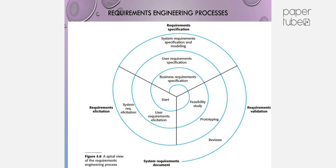What is the Requirements Engineering Process? The processes used for Requirements Engineering vary widely depending on the application domain, the people involved, and the organization developing the requirements. Requirements Engineering is an iterative activity in which these processes are interleaved.